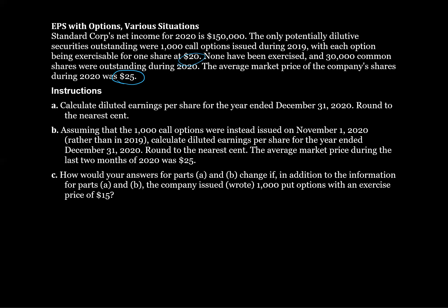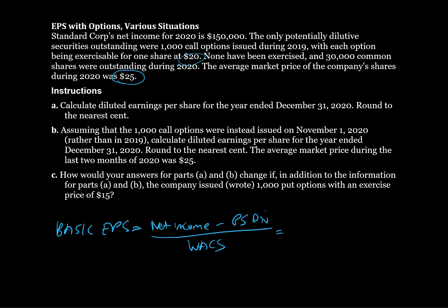The first thing we're going to do is calculate our basic EPS, because we always want to make sure that our diluted EPS is truly dilutive — lower than our basic EPS. Basic EPS equals net income minus preferred share dividends divided by weighted average common shares. In this case, we have $150,000 net income, no preferred share dividends, and 30,000 shares outstanding. The shares haven't changed during the year, so 150,000 divided by 30,000 gives us $5 per share.